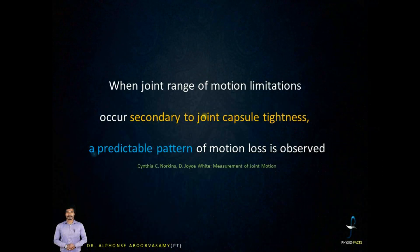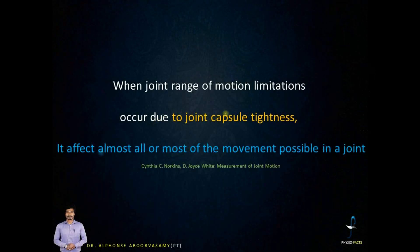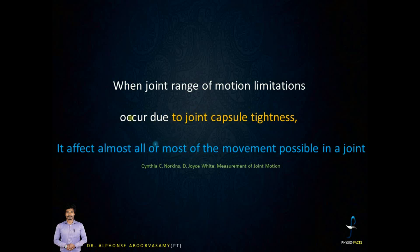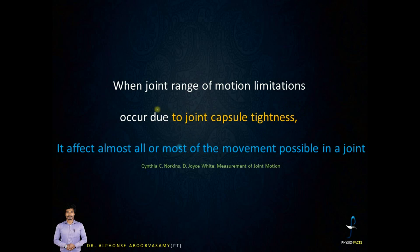When a joint range of motion limitation occurs secondary to joint capsule tightness, a predictable pattern of motion loss is observed. If a joint has limitation because of muscle involvement — say the brachialis muscle — it will affect extension of the elbow joint alone. But if a capsule is the primary cause of restriction, probably due to inflammation, it will affect almost all or most of the movements possible in that joint, leading to a pattern of movement loss, not just one movement restriction.